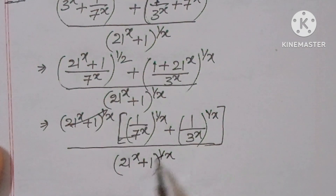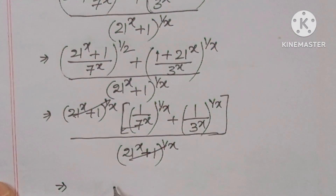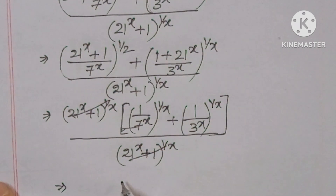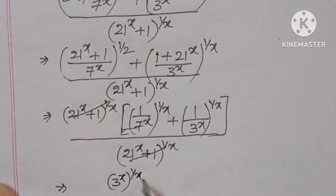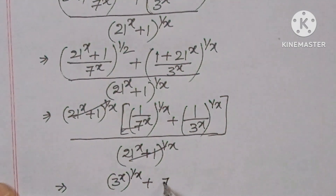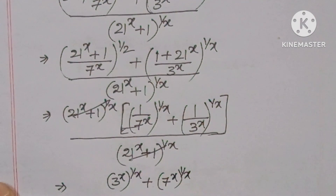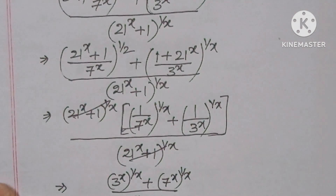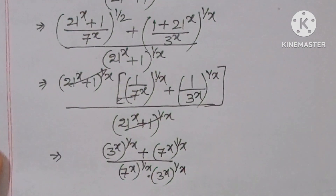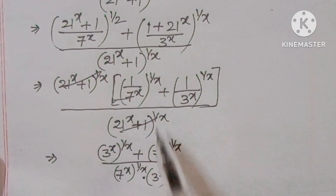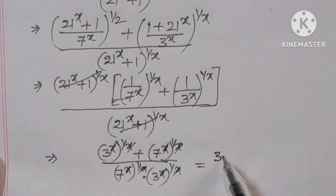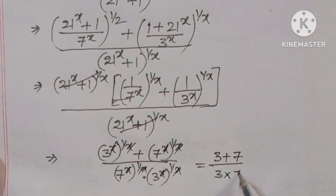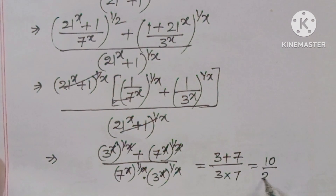The numerator and denominator get cancelled. Taking the LCM: 3 power x whole to the power of 1 by x, plus 7 power x whole to the power of 1 by x, over 7 power x whole to the power of 1 by x, into 3 power x whole to the power of 1 by x. The x's cancel, giving 3 plus 7 by 3 into 7, which equals 10 by 21. That is the answer.